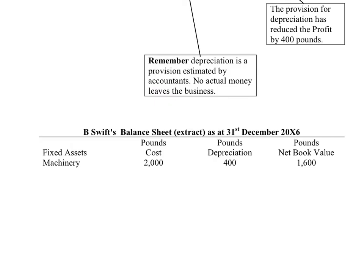How would this be shown in the balance sheet? In B-Swift's balance sheet, it would be shown under three columns: the original cost of the asset — what we sometimes call the historic cost — in this case £2,000; the total depreciation, which is the same as the annual because it's right at the beginning of its life, which is £400; and that leaves you with a net book value. In other words, today's market value of this machine is £1,600.